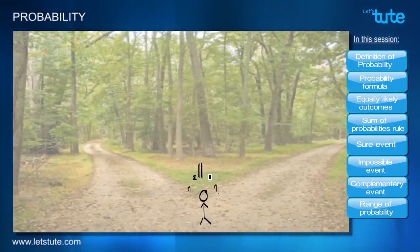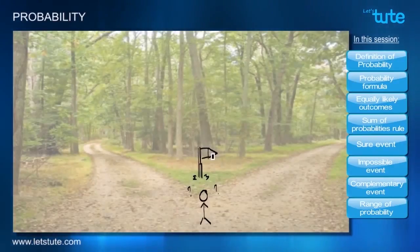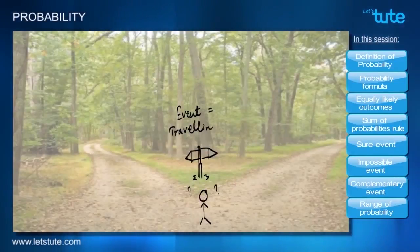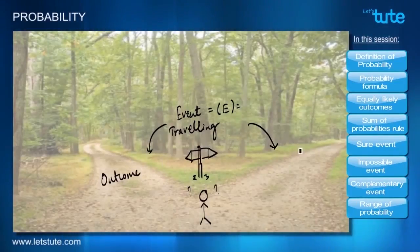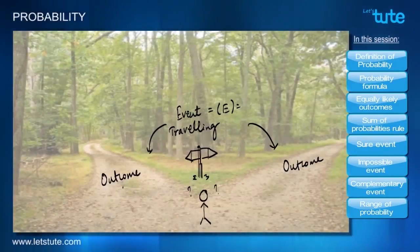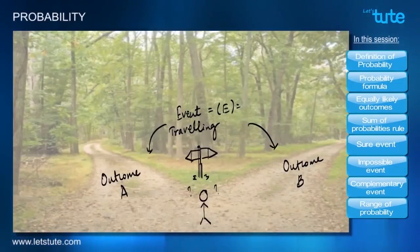The first thing that we naturally seek out is some kind of signboard or help or direction which can help us in making the decision between the two roads. The event that is happening right now is traveling by a road which we can denote as capital letter E. Clearly, the two roads that we see in front of us make the outcome of this event. Let's denote the road on our left as A and to our right as B.